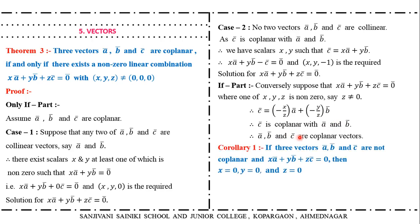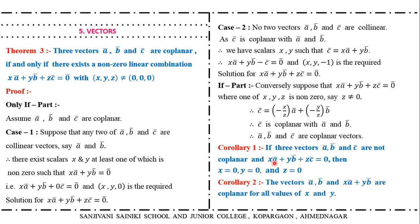Now the corollary: if three vectors A bar, B bar, C bar are not coplanar and X·A bar plus Y·B bar plus Z·C bar equals zero bar, then X, Y, Z must all be zero. Also note that vectors A bar, B bar, and X·A bar plus Y·B bar are coplanar for all values of X and Y.